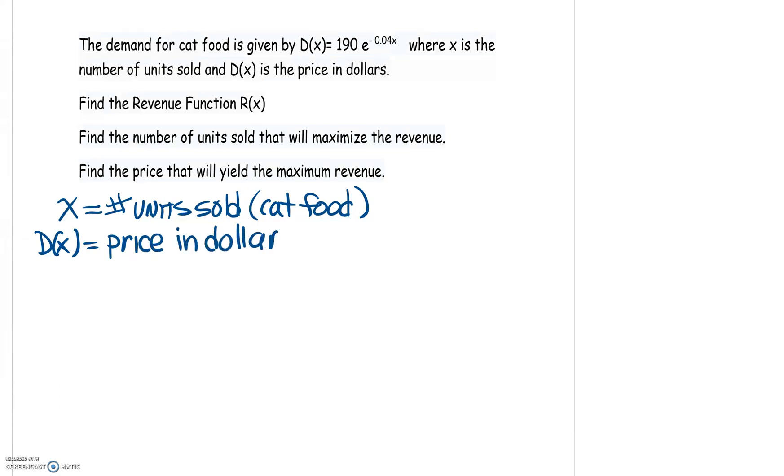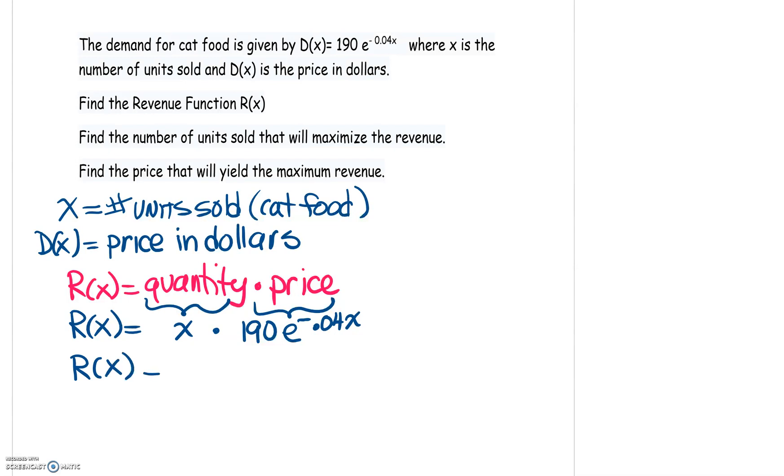So when we make our revenue function, because we know that revenue is quantity multiplied by price, we know what functions to use. So the first part of finding the revenue function will be R of X is going to be the quantity, which we identified as X, multiplied by the price, which is given in the problem, 190 e to the negative 0.04 X. So when we combine those together, we could multiply the X and the 190. So I have 190 X e to the negative 0.04 X.